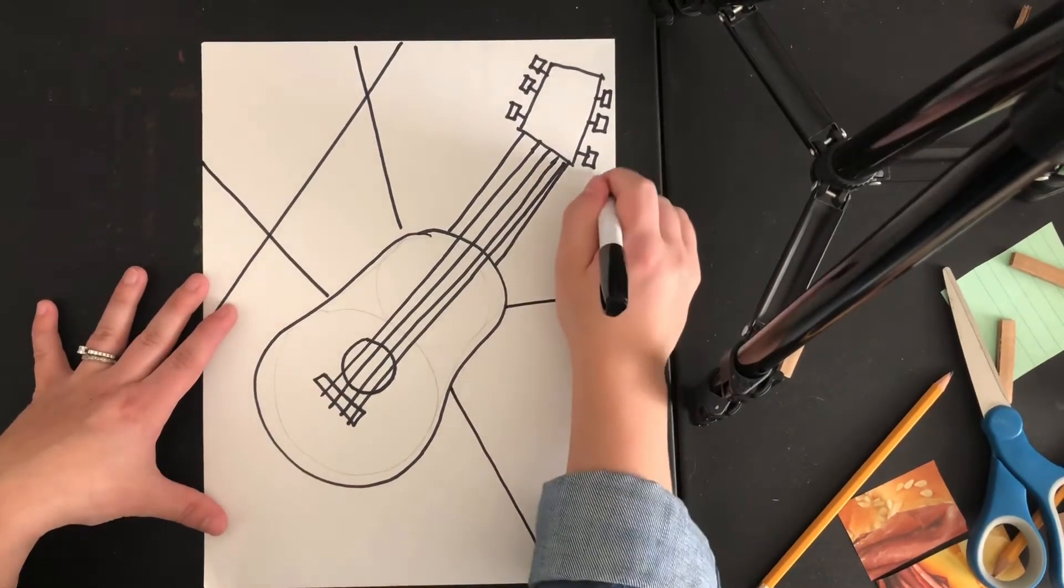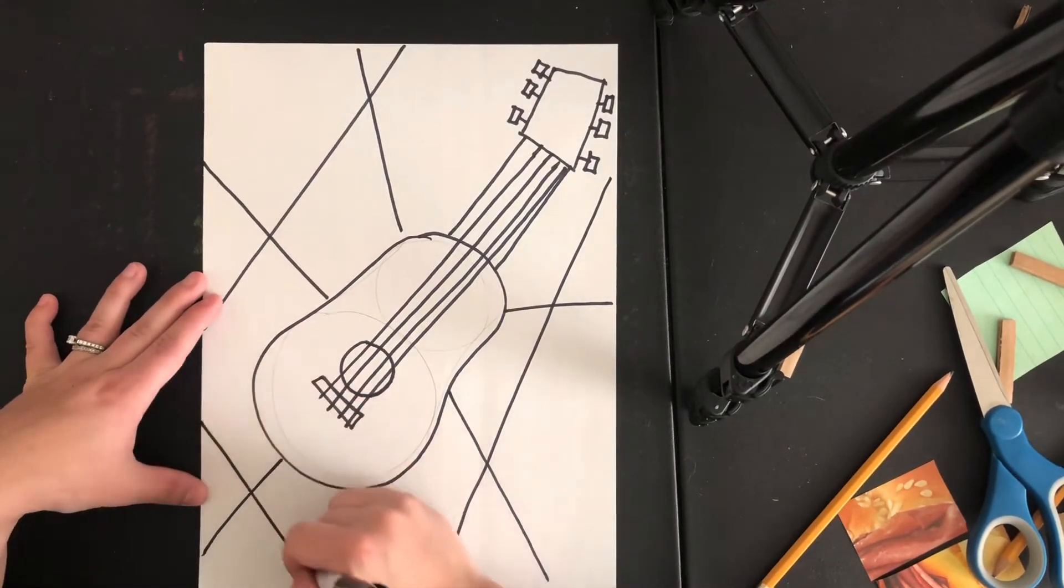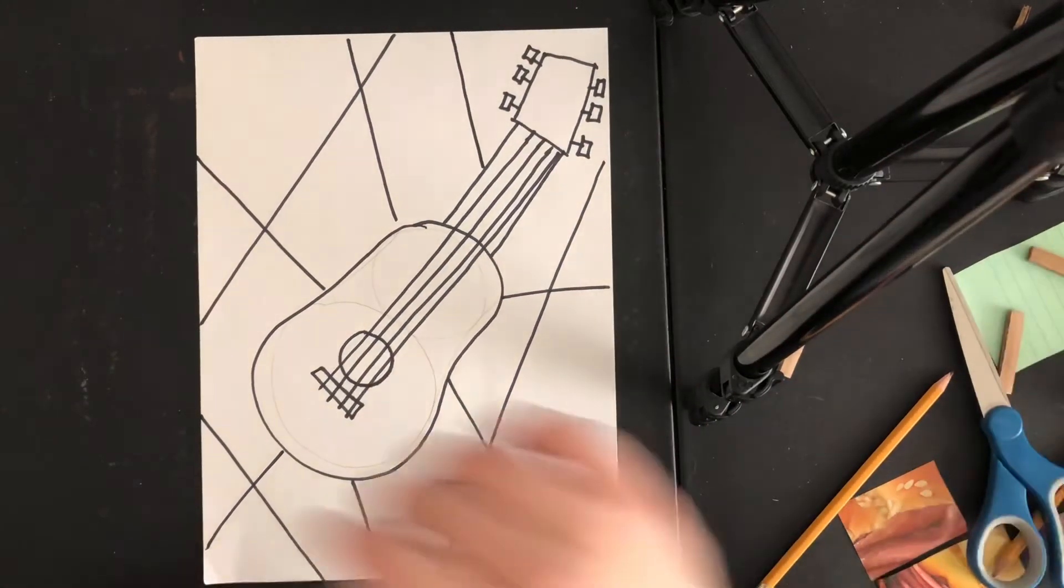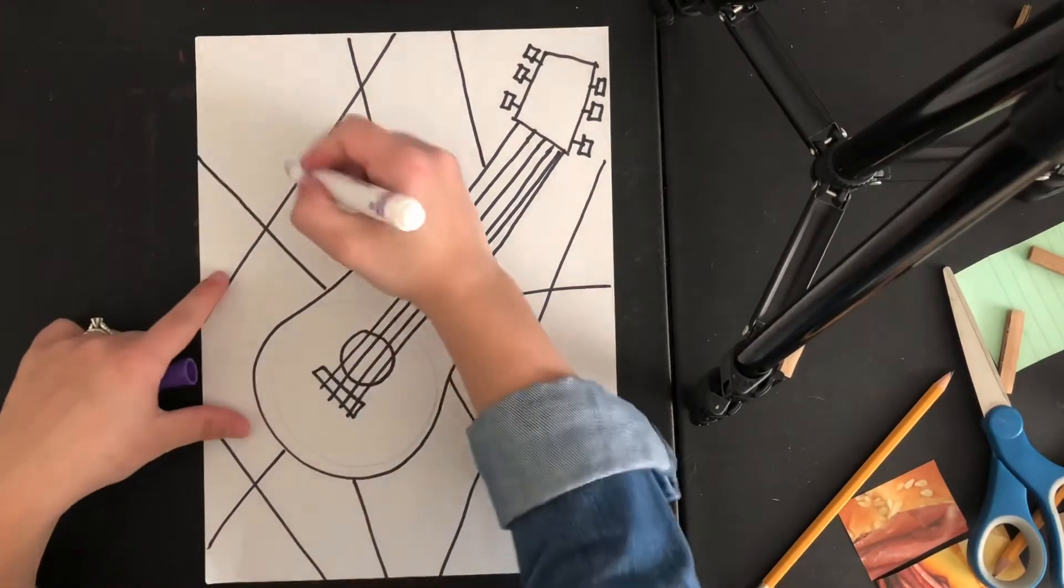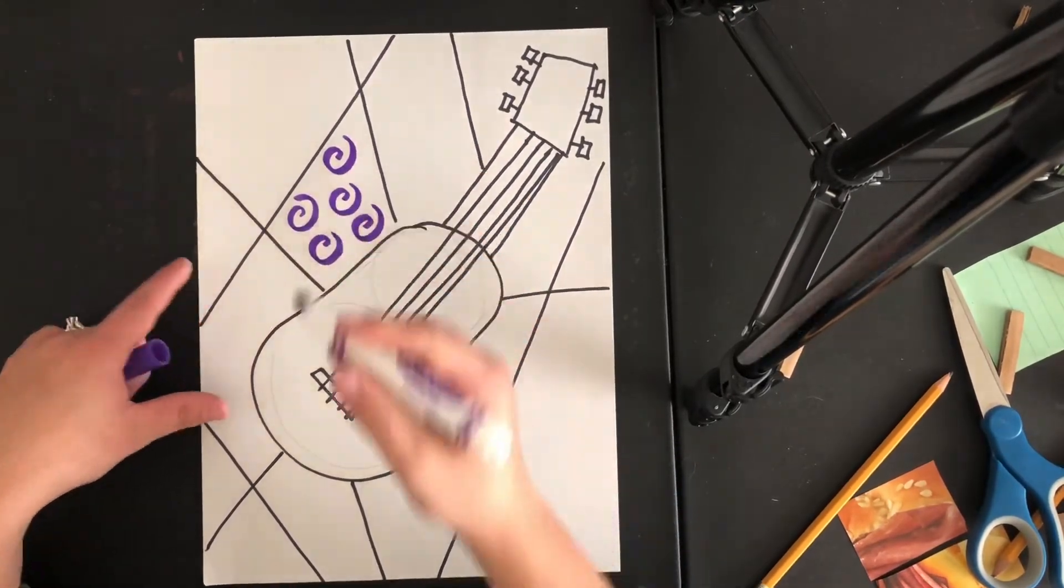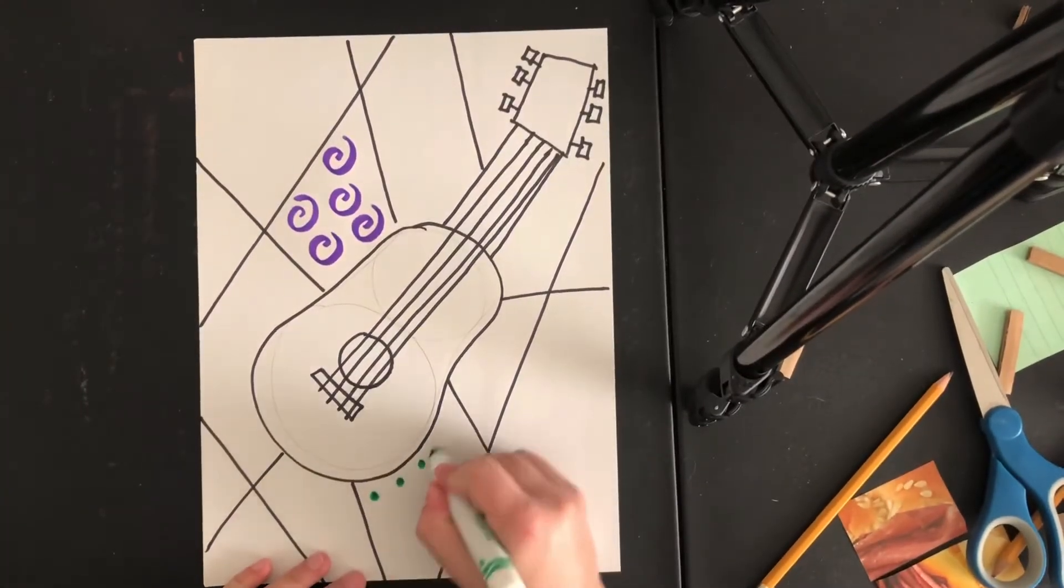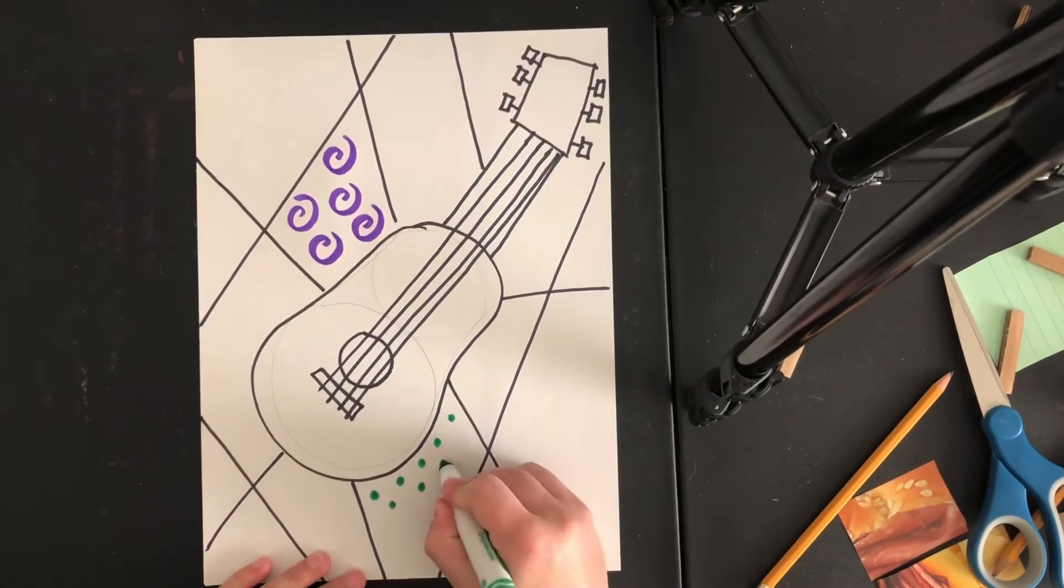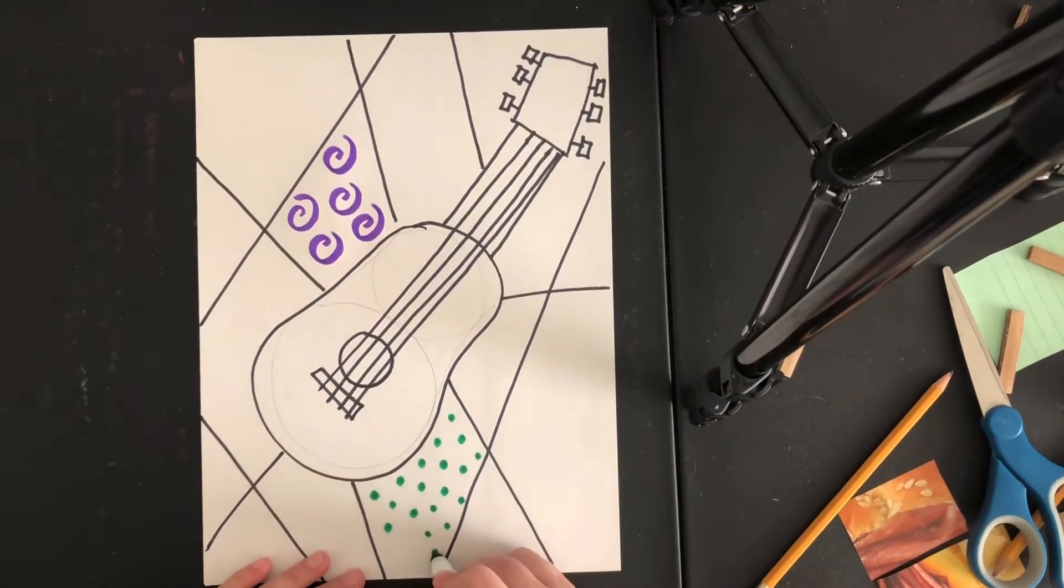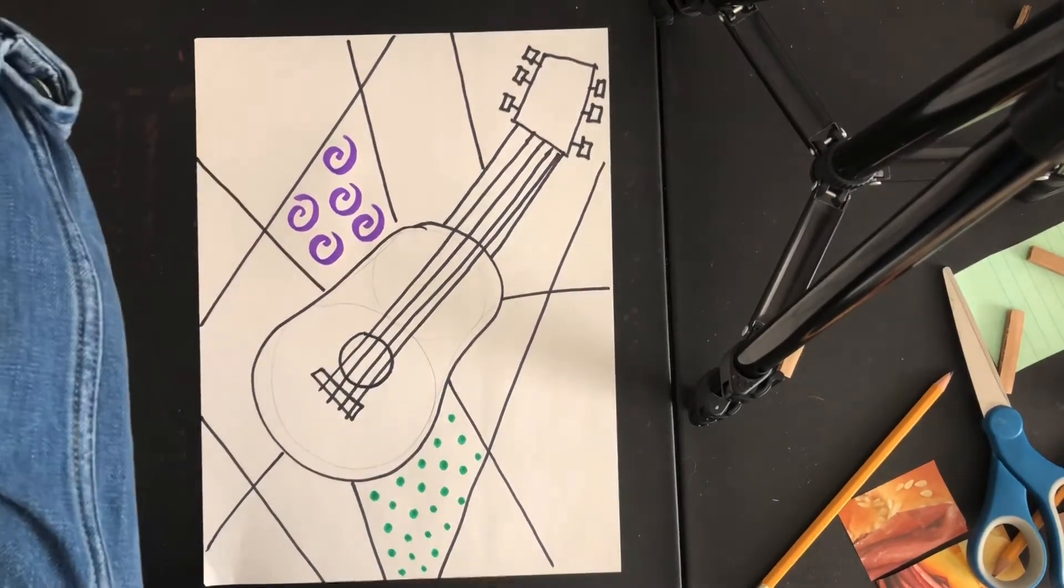So you could cut up your background using different lines. And then in between those lines, you could add different patterns and designs to create your collage. So it's not a true collage in the sense of cutting and pasting and gluing things together. But it's still a collage in the sense that you have all these designs and patterns mixed together. So we're going to count it as a collage.